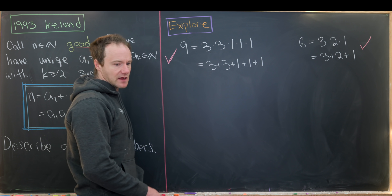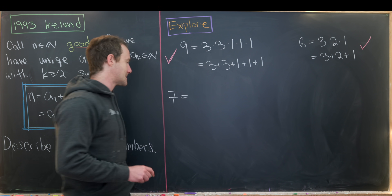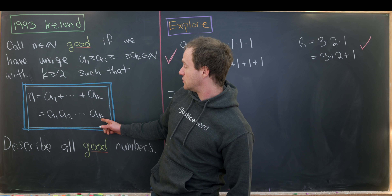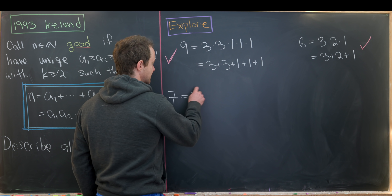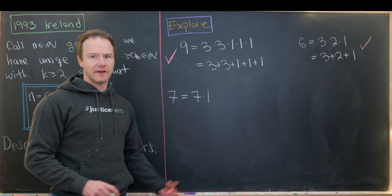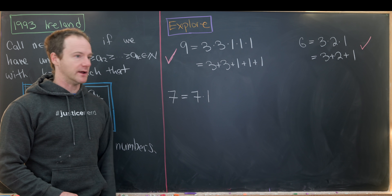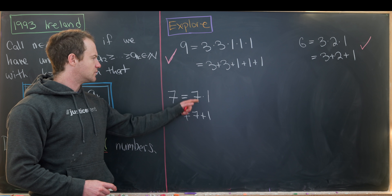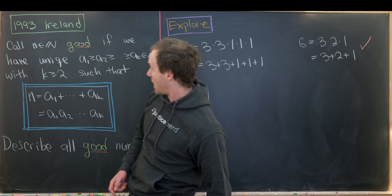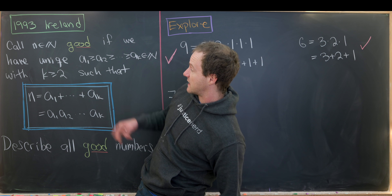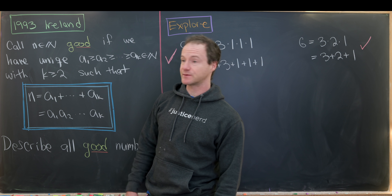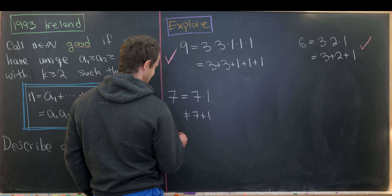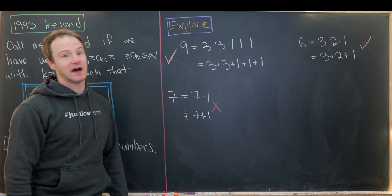What about 7? Seven is a prime, so any factorization into at least two factors looks like 7 × 1 (with possibly more ones). But 7 × 1 is not equal to 7 + 1. Seven fails to be good not because of a uniqueness problem but because of an existence problem — it's impossible to write it in the required form at all.